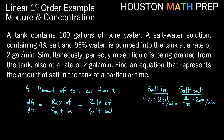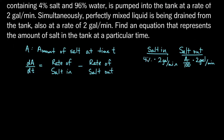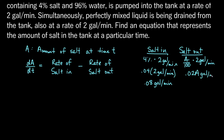So our rate of salt going into the tank is going to be 4% times 2 gallons per minute. Our rate of salt going out is going to be whatever A is — the amount of salt in the tank at that time — divided by 100, times the rate of 2 gallons per minute. So that gives us 0.04 times 2, which is 0.08 gallons per minute coming in, and A divided by 100 times 2, which is 0.02A gallons per minute going out.